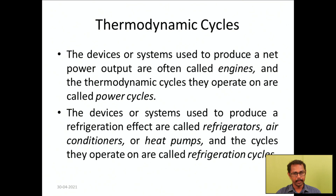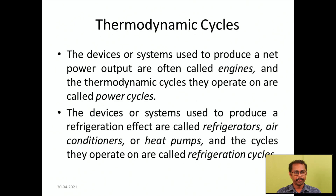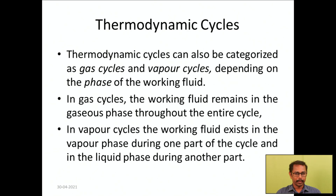The devices used to produce a refrigeration effect are called refrigerators, air conditioners, or heat pumps, and the cycles they operate on are called refrigeration cycles. The refrigerator produces cooling effect, the air conditioner maintains cooling for a whole system, and the heat pump produces heating effect. Thermodynamic cycles can also be categorized as gas cycles and vapor cycles depending on the phase of the working fluid. In gas cycles, the working fluid remains gaseous throughout; in vapor cycles, it exists as vapor during one part and liquid during another.